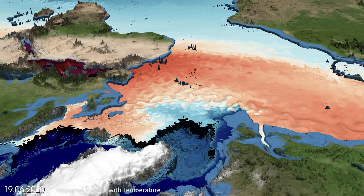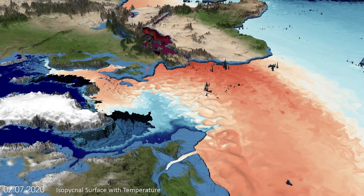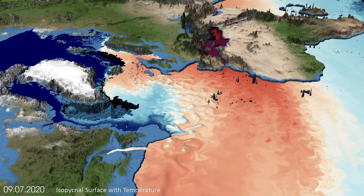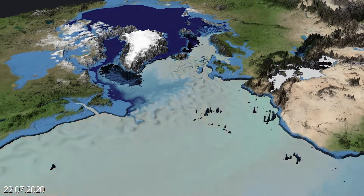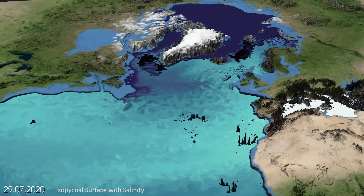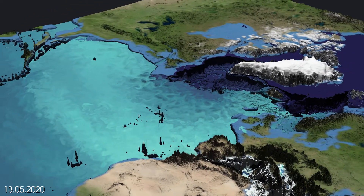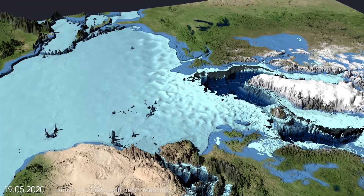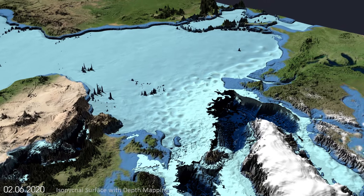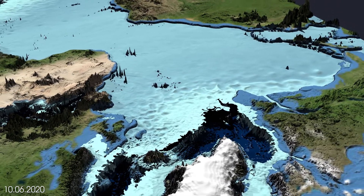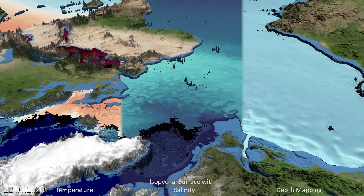An isopycnal layer, as can be seen here, is a 3D surface that cuts through the ocean and visualizes a layer of constant density. The density generally increases with depth, but also depends on temperature and salinity. Transports in the ocean's interior take place along these isopycnal surfaces. Additionally, we can also map other variables on top of the surface, such as temperature, salinity, or depth information. The depth map portrays the eddying structure of the North Atlantic current as hills, as they transport denser water, warmer and saltier than the surrounding ocean.